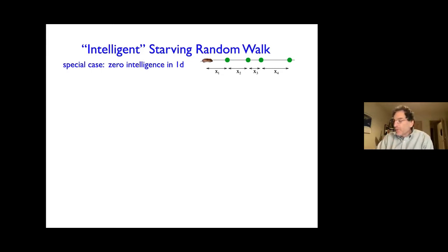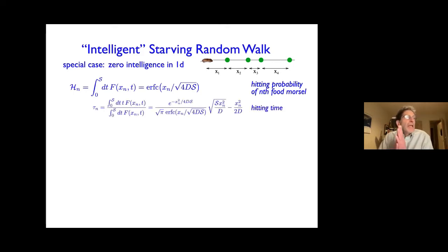So let's try and understand the dynamics of the model. And as a starting point, let's think about a forager without any intelligence at all. And so for the case of no intelligence, and let's look at one dimension, we have food morsels that are distance x1, x2, x3 away from the forager. And in order for the forager to survive, he's got to get to the first morsel of food. And so the probability that the forager gets to the first morsel of food is just the first passage probability to get to a distance xn, where xn is the distance of the nth morsel of food. So this is the hitting probability to the nth morsel of food—you've got to get there within a time s, which is his starvation time, how long you can live without food before starving to death. And this is the first passage probability. And this just gives you the error function complement.